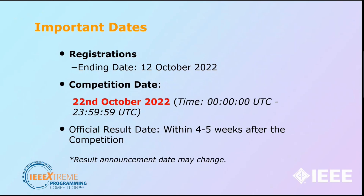These are the important dates of IEEE Xtreme 16.0. Registrations will be ending on the 12th of October 2022, so make sure you register yourself fast. We'll be sharing the registration details and links. The competition date is 22nd October 2022, starting from 5AM IST as mentioned. Results will be announced within 4 to 5 weeks after the competition — normally within a month, though this may vary.